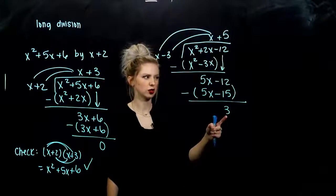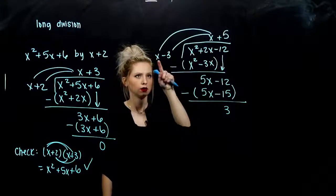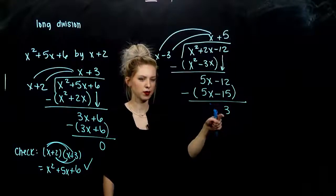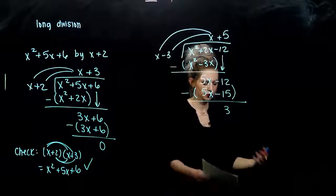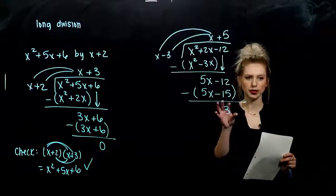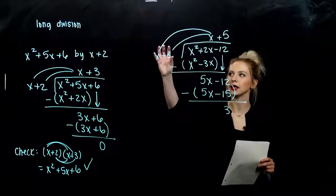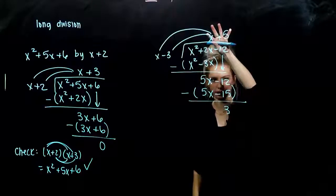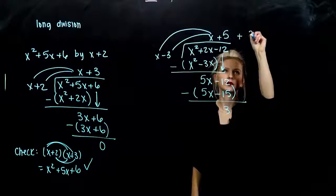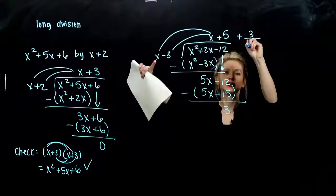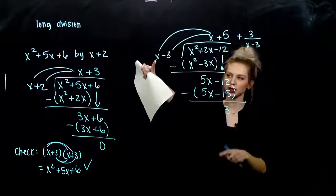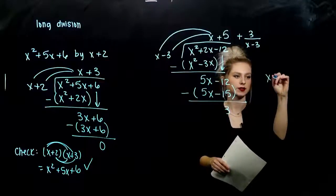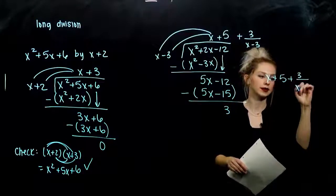So when do we stop? There's nothing else to bring down. What do I have to multiply x by to get me 3? I'm mixing apples and oranges there, so we have a remainder of 3 left over. The 3 is the only piece that hasn't been divided by x minus 3 yet. So when we write our complete answer, this was the whole part we got out. But what's left over — 3 — still needs to be divided by x minus 3. We write that remainder as such. In the end, our answer is x plus 5 plus 3 over x minus 3.